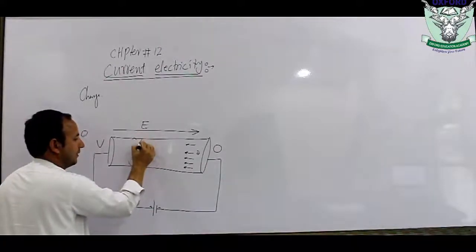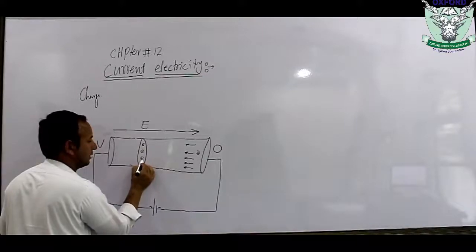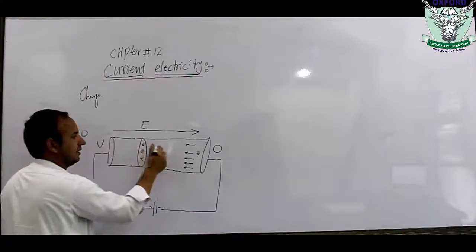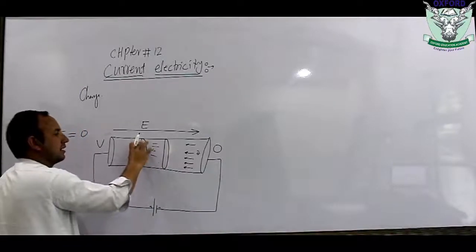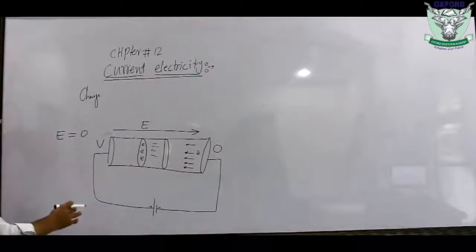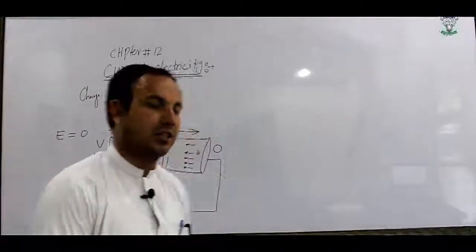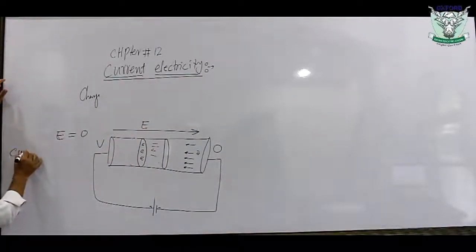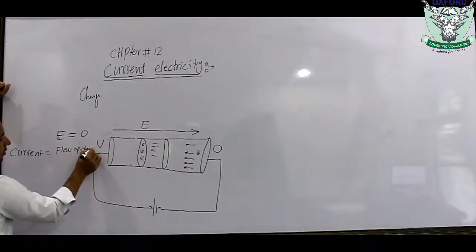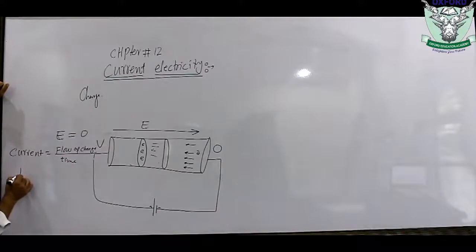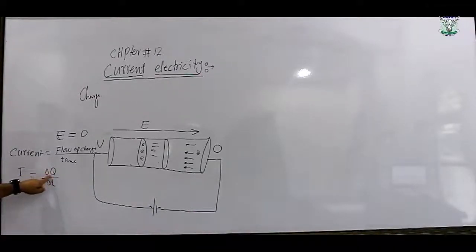Current is defined as the rate of flow of charge through any cross-sectional area. The formula is: I = ΔQ / ΔT, where I is current, ΔQ is the flow of charge, and ΔT is the passage of time.